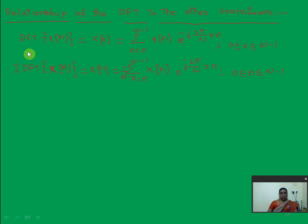See the definition. The DFT of x(n) is x(k), which is equal to the summation from 0 to N minus 1 of x(n) e to the power minus j 2π kn over N, where k is in the range 0 to N minus 1.